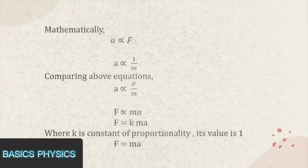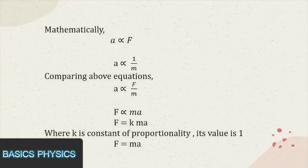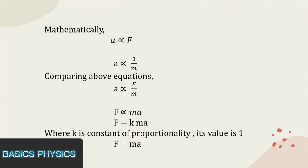Mathematically, acceleration a is directly proportional to applied force F. a is inversely proportional to its mass m. Combining above equations, a is proportional to F/m. F is proportional to the product of m and a. F equals k times m times a, where k is the constant of proportionality. Its value is 1. Therefore, F equals ma.